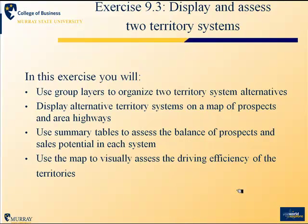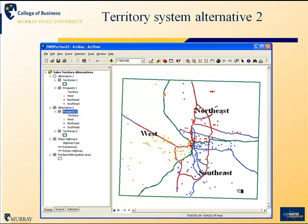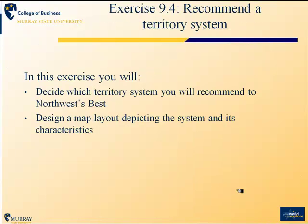In the third task of this chapter, you'll take a look at two alternative territory systems — one similar to the one you've designed, and another designed using a different set of priorities. You'll use group layers to display these systems and show the alternative territory systems on a map of prospects that also displays highways, to compare the drivability of the two systems. You'll use summary tables to assess the balance of prospects and visually analyze the systems to improve driving efficiency and evaluate sales potential.